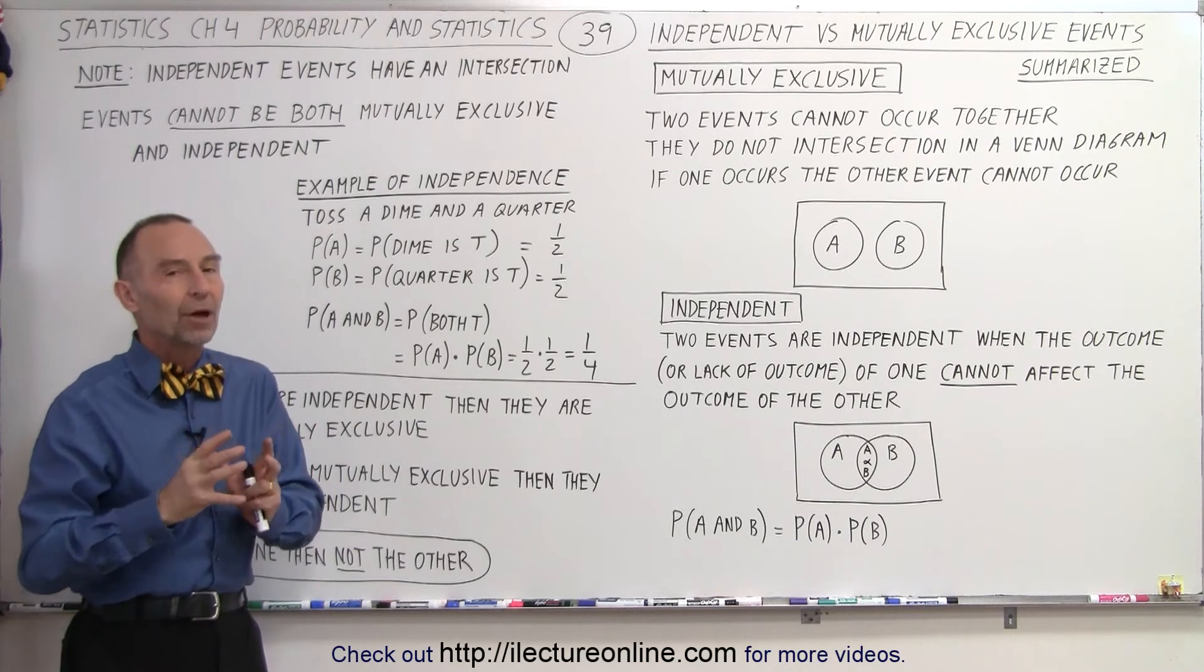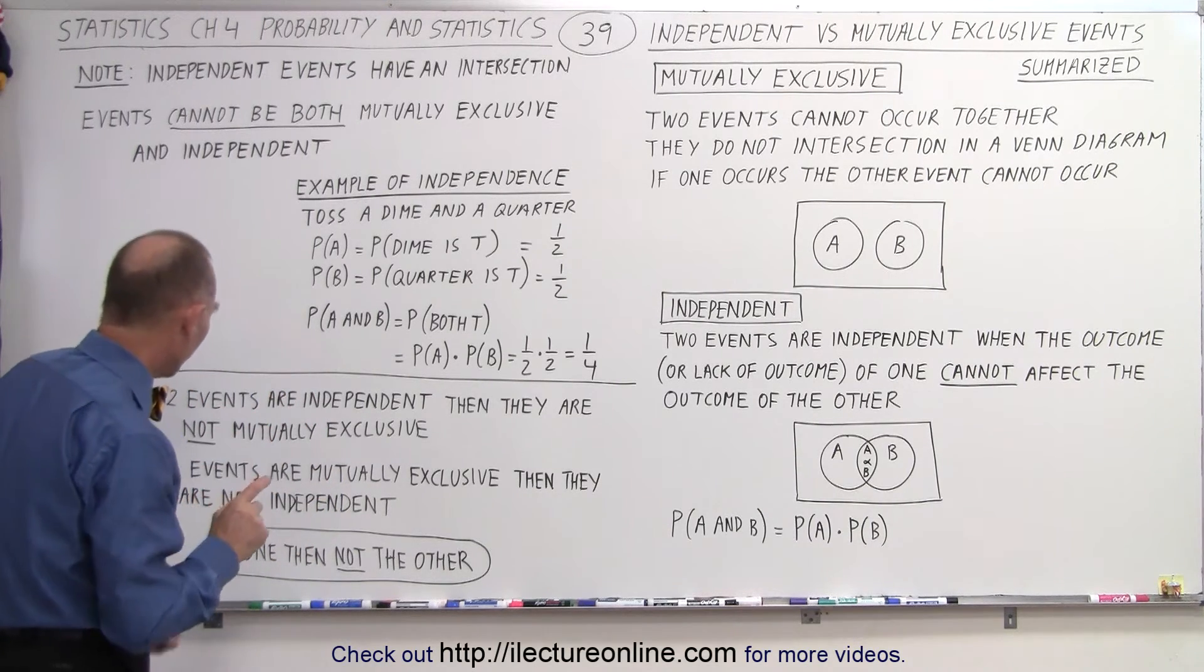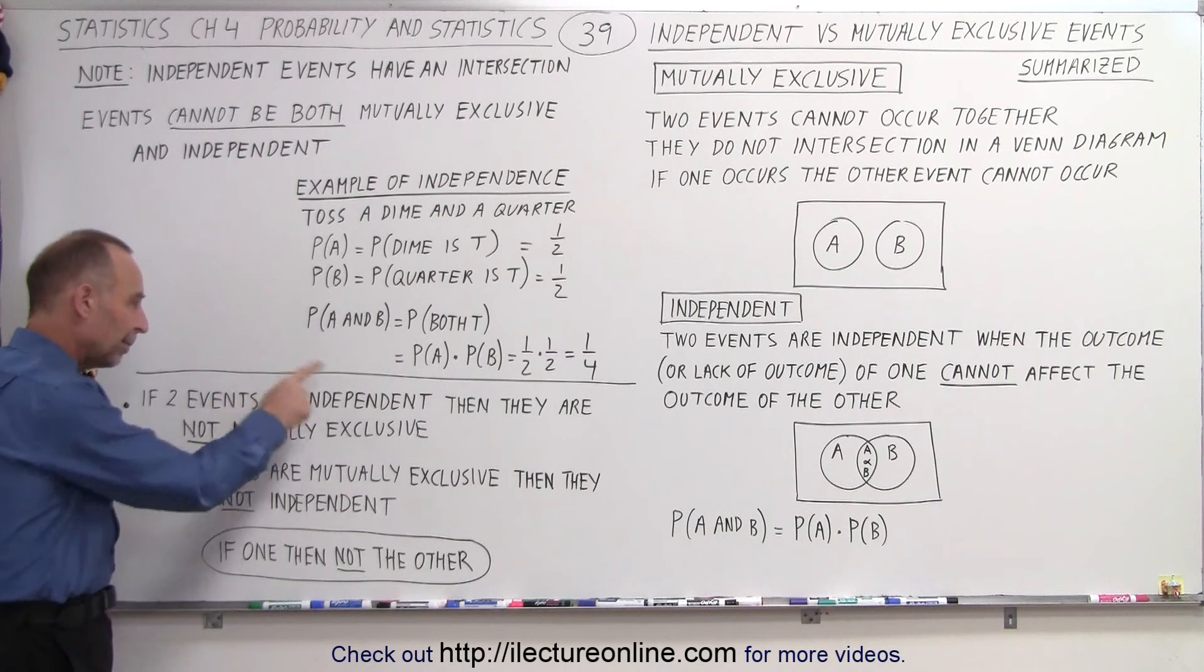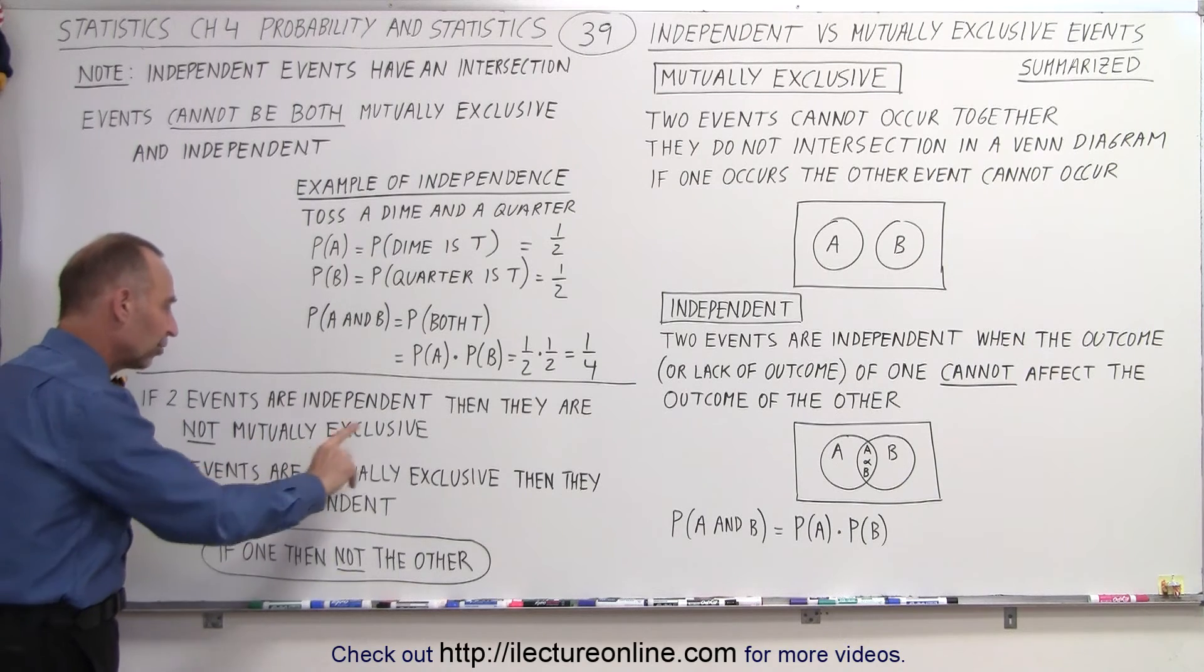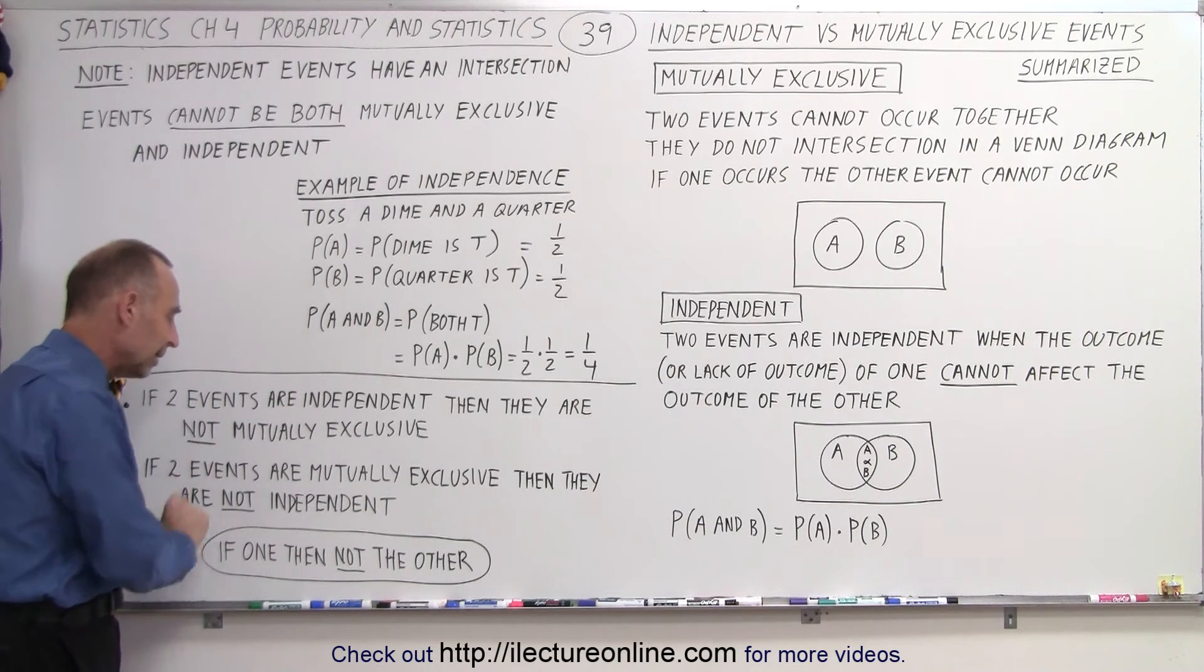And so, therefore, there's a quarter probability that both will be tails. And that's a perfect example of what we mean by two independent events. So, if two events are independent, then they are not mutually exclusive. And if two events are mutually exclusive, then they are not independent.